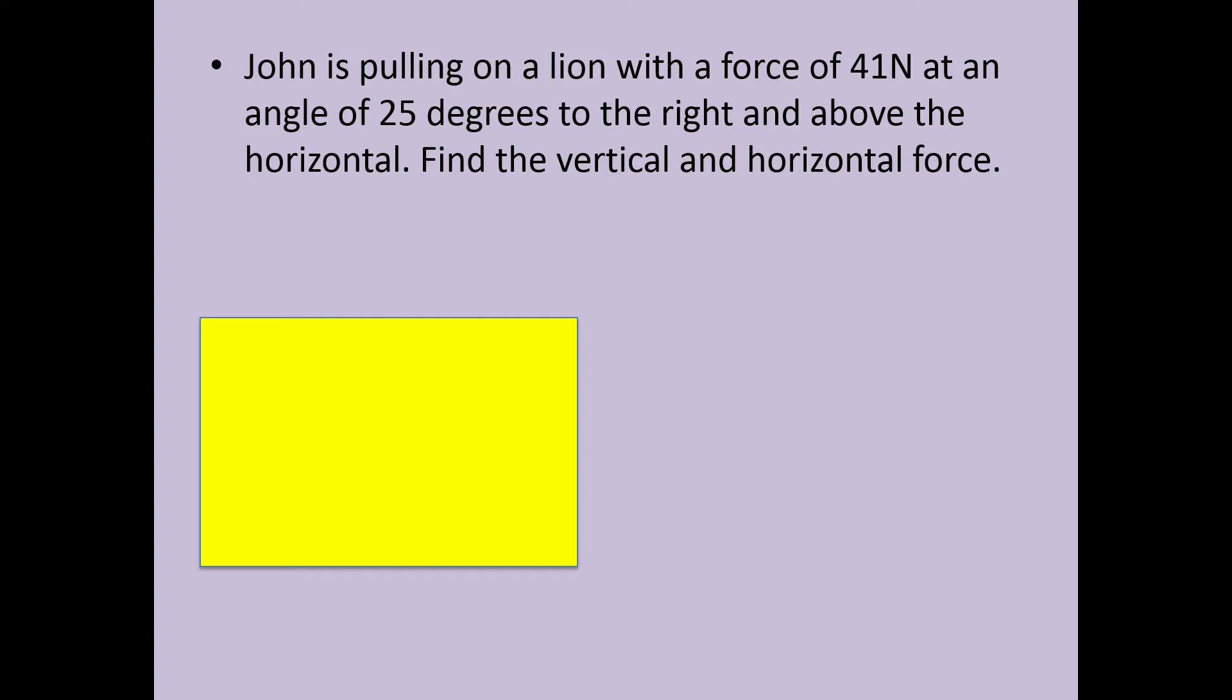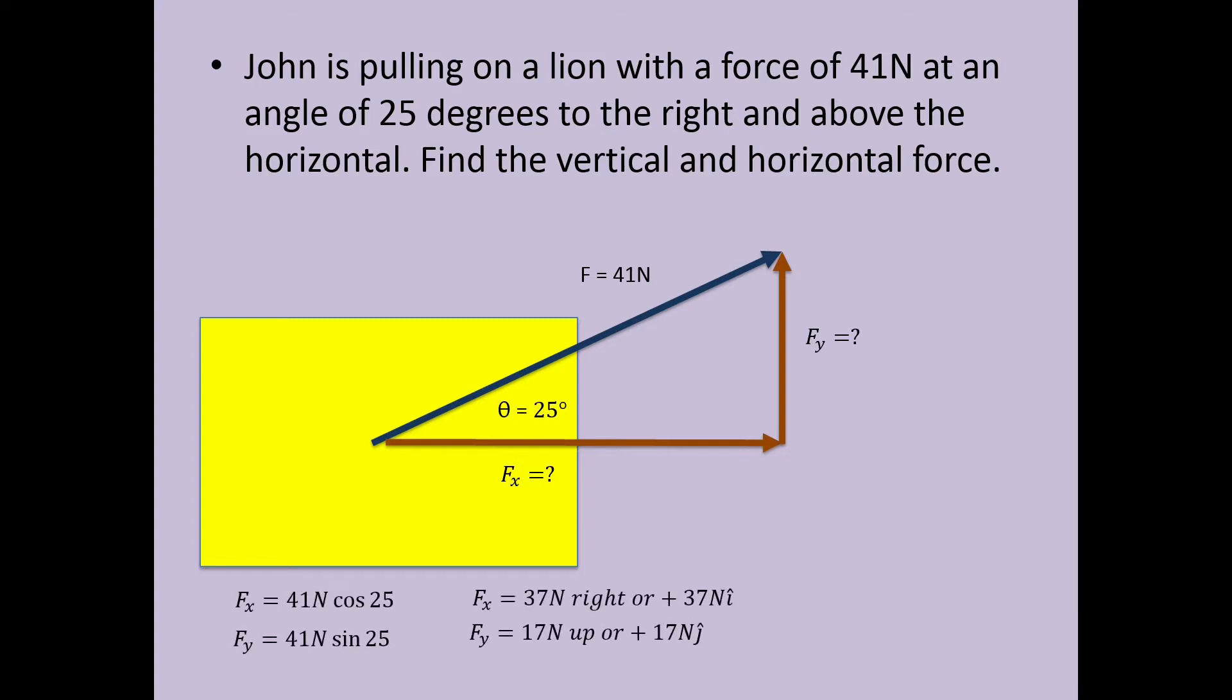The force John is pulling is diagonal as it includes an angle. The term above the horizontal refers to above the x axis, and sometimes it may specify which direction above the x axis. Since the diagonal force and the angle are provided, the component vectors fx and fy can be found using cosine and sine respectively.